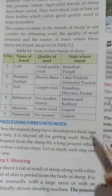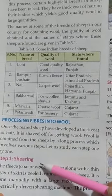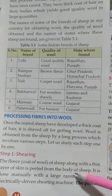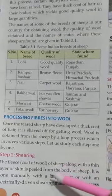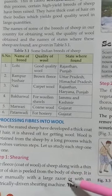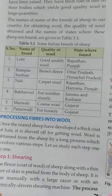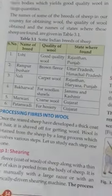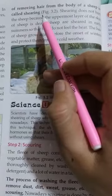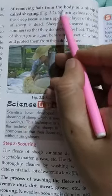Step 1 is shearing. The fleece and coat of wool along with a thin layer of skin is removed from the body of the sheep. This removal - the cutting of wool from the skin of the sheep - is done manually with a large razor or with an electrically driven shearing machine. The process of removing hair from the body of the sheep is called shearing.